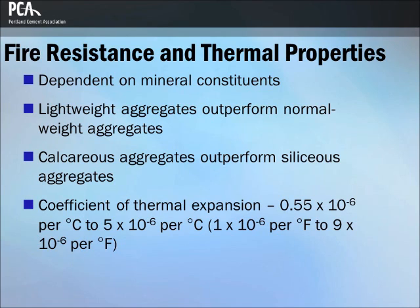The fire resistance and thermal properties of concrete depend to some extent on the mineral constituents of the aggregates used. Manufactured and some naturally occurring lightweight aggregates are more fire resistant than normal weight aggregates, due to their insulating properties and high temperature stability. In general, concrete containing a calcareous coarse aggregate performs better under fire exposure than concrete containing quartz or siliceous aggregates, such as granite or quartzite. At about 1,060 degrees Fahrenheit, quartz expands 0.85%, causing disruption to the concrete structure. The coefficient of thermal expansion of aggregate ranges from 1×10⁻⁶ per degree Fahrenheit to 9×10⁻⁶ per degree Fahrenheit.